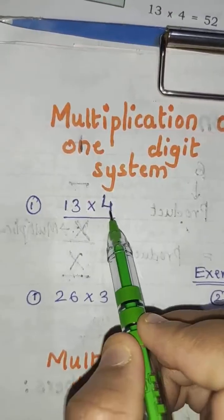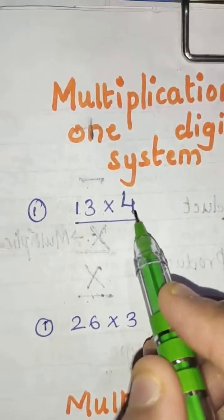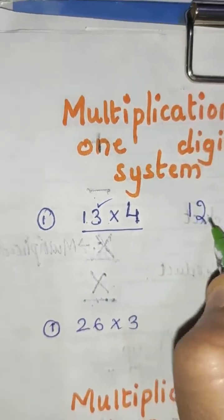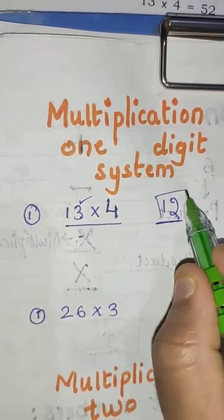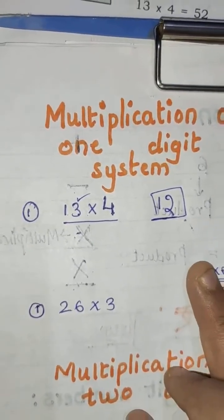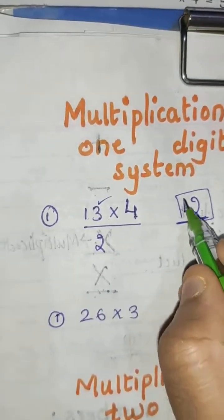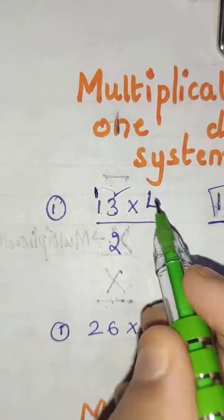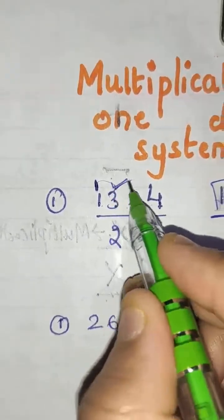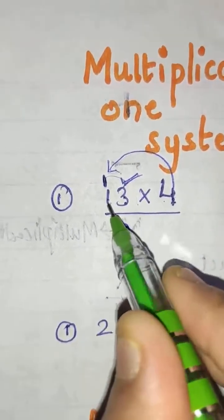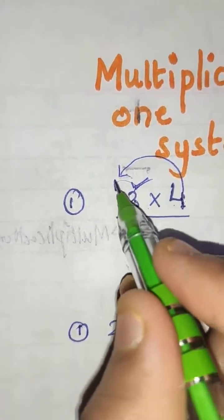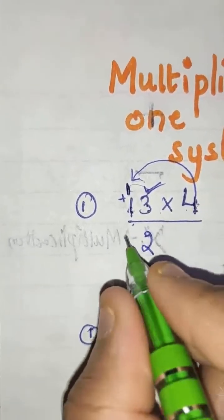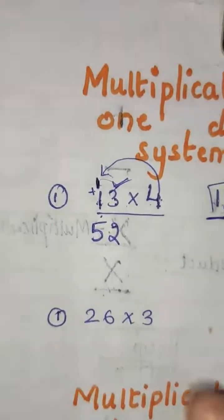13 into 4. First we have to start multiplying the numbers from the unit place. So 4 threes are 12. We can't write 12 directly here, as two digits cannot be in a single place. So we write the right number 2 here, and the left number 1 will carryover to the tens place. Now 4 ones are 4, plus 1 is 5. So the answer is 52.